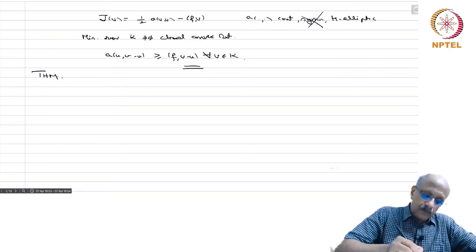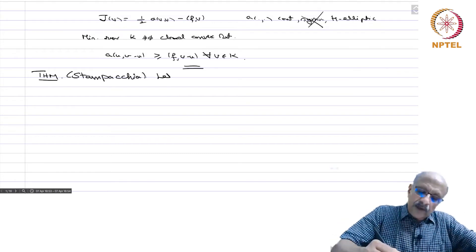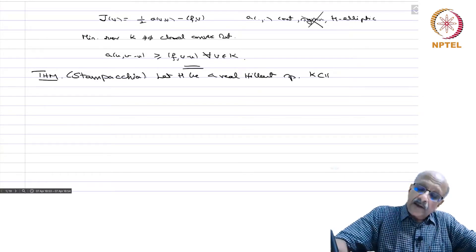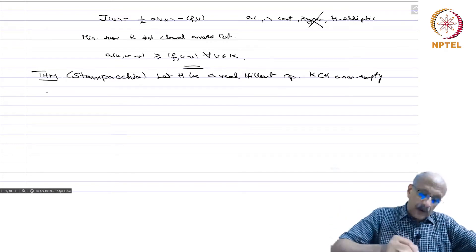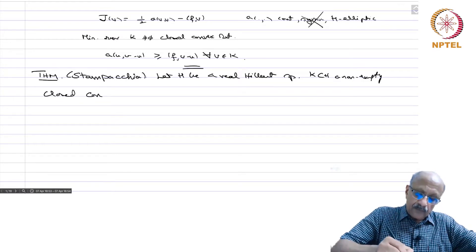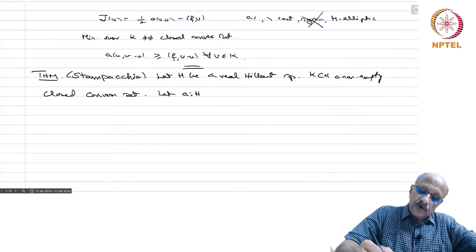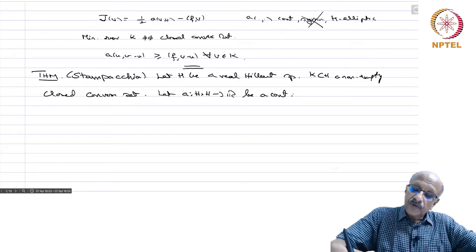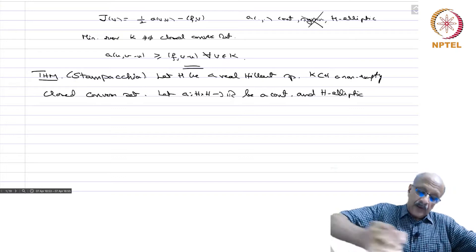This is the theorem of Stampacchia. Let H be a real Hilbert space and let K contained in H be a non-empty closed convex set. Let A from H cross H to R be a continuous and H-elliptic bilinear form.